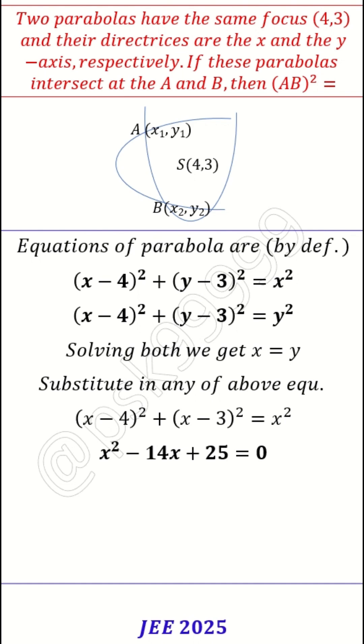So this quadratic equation has two roots. Sum of the two roots, x1 plus x2, is 14. x1 into x2 is 25.